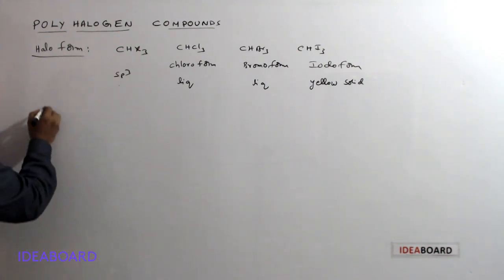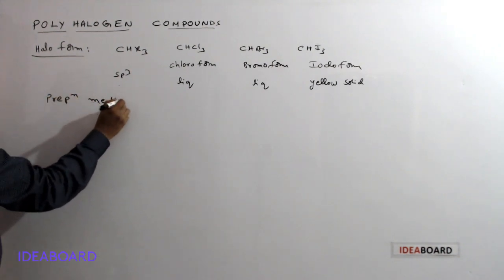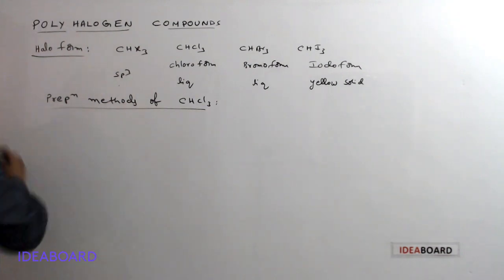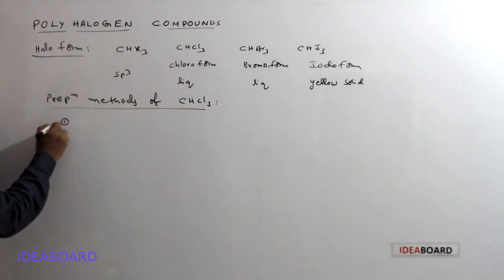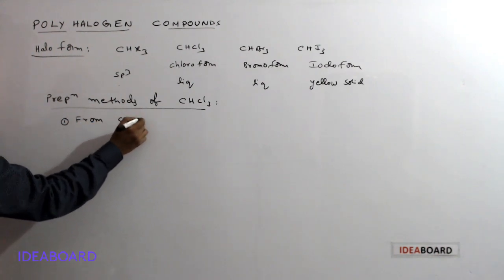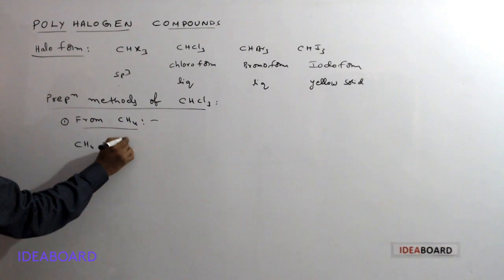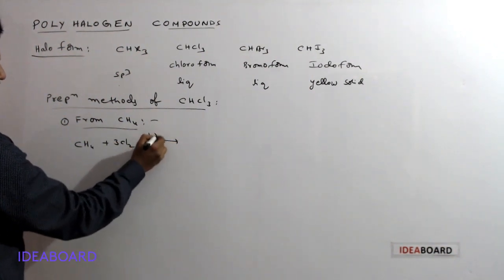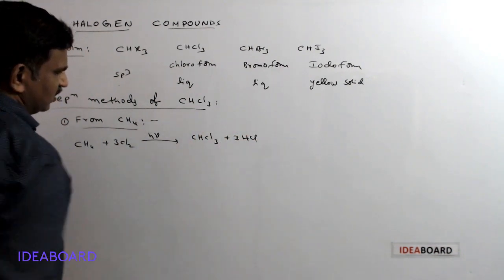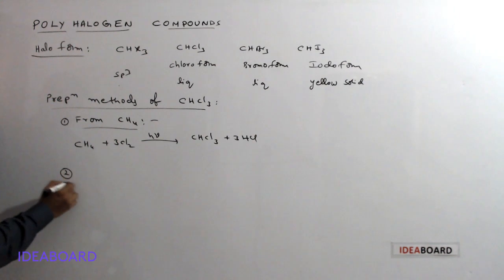Now let us look at the preparation methods of chloroform or any haloform. The first method is from methane. When CH4 reacts with chlorine in the presence of sunlight, it generally forms CHCl3 plus 3 HCl. However, this is not a good reaction because it is an uncontrolled chain reaction.